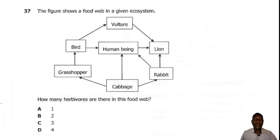Question 37. The figure shows a food web in a given ecosystem. How many herbivores are there in this food web? We are looking at herbivores and herbivores are plant eaters only. When you look at the food web, our plant or producer here is the cabbage. So we want to look at animals that are feeding on the cabbage only. Animals that are feeding on the cabbage is grasshopper and rabbit. We also have human being, but a human being is an omnivore feeding on both plants and animals. So since the question is only asking us for herbivores, the correct answer here is 2, which is B.